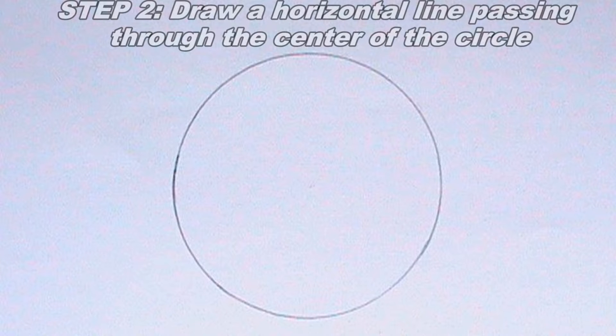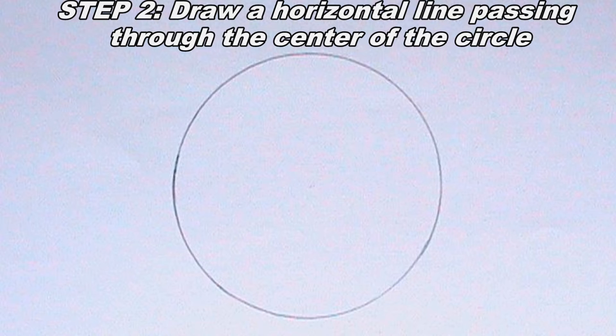The next thing I will do is to draw a horizontal line passing through the center of the circle. I will use my t-square to ensure that the line is perfectly horizontal.